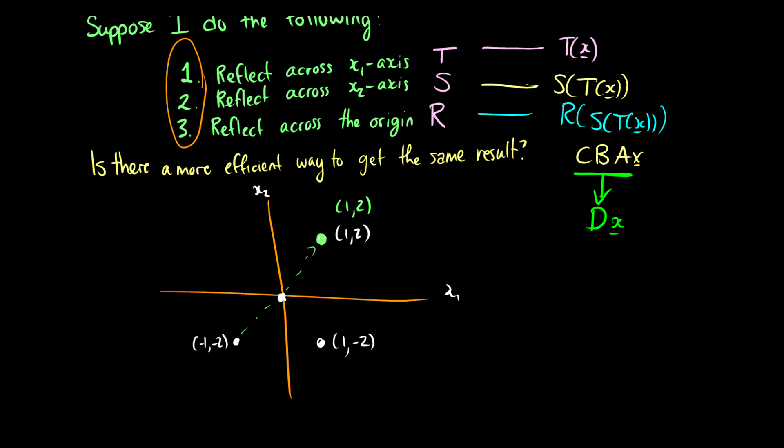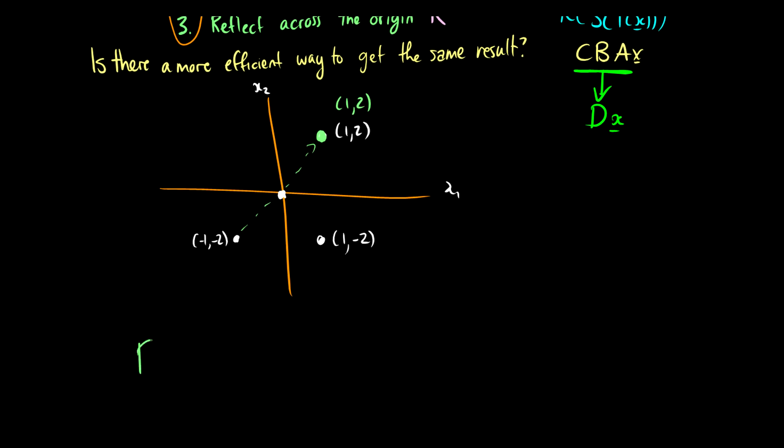So what is this transformation r of s of t of x? Well, this is just the same thing as taking the identity of x. We're not even doing anything. We're just putting the identity matrix into x and we're getting back to the same point. So if you ever want to take a point and use a matrix to get back to the same point, you can do three reflections or you can just put it in the identity matrix and not do anything and not touch it.